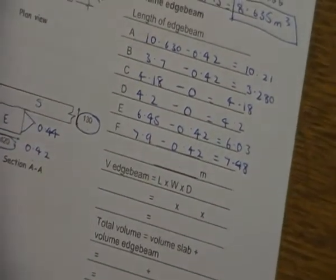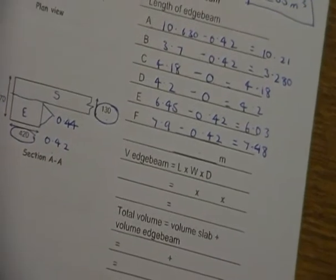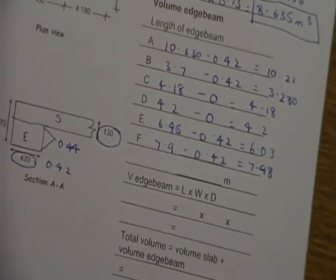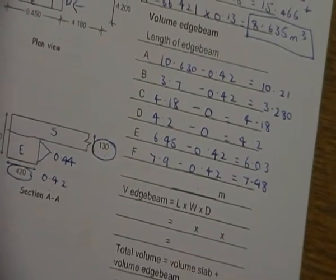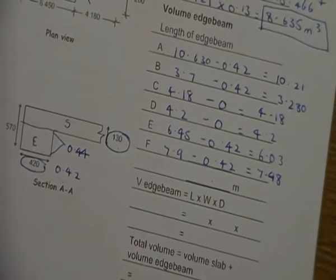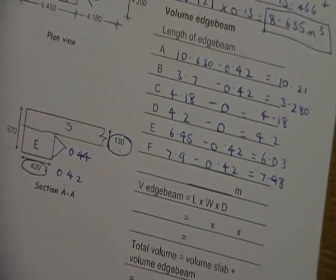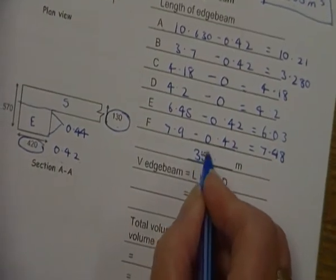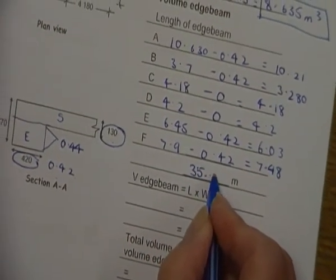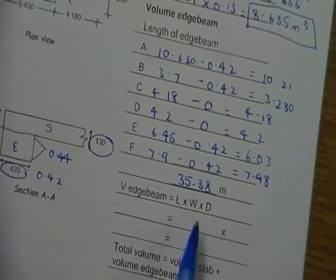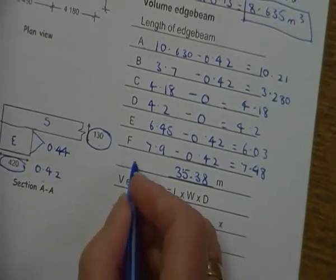E is going to be 6.03 and F is going to be 7.48. Now we need you to add these up. If someone could put an answer in the chat box, that would be fantastic please.